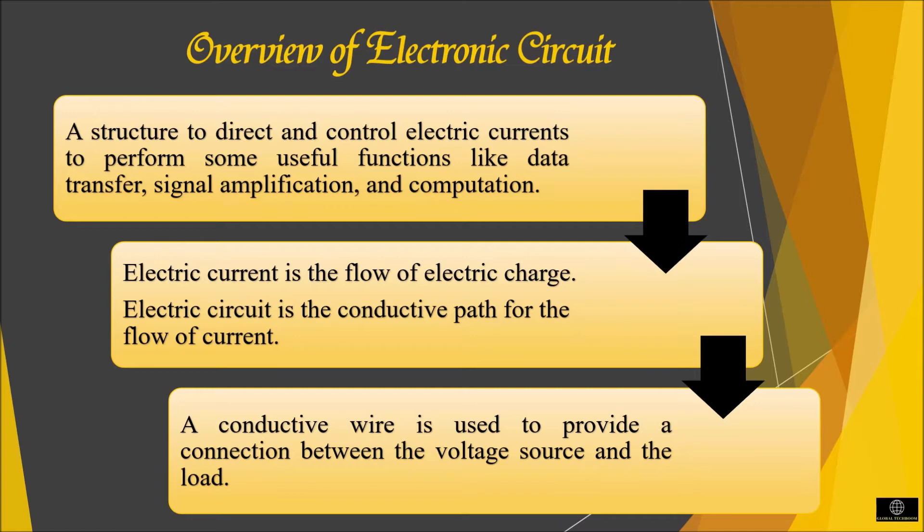This is used to perform some useful functions like data transfer, signal amplification and commutation. Electric current is the flow of electric charge, while electric circuit is the conductive path for the flow of current. In circuits, a conductive wire is used to provide a connection between the voltage source and the load.